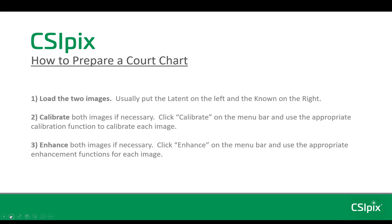Step 1 is to load two images. Usually put the latent on the left and the known on the right. Step 2 is to calibrate both images if necessary. Click Calibrate on the menu bar and use the appropriate calibration function to calibrate each image. I have a video dedicated to this that you can watch.